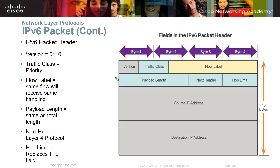Looking at the V6 header, you can see it's much more simplified compared to V4. You have your version, flow label, length, next header, and hop limit. Hop limit fulfills the same function as time to live in V4 — after the packet reaches that limit, it dies. Then you have your source IP address and destination IP address.